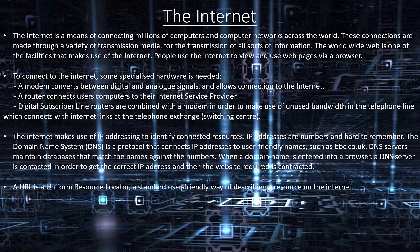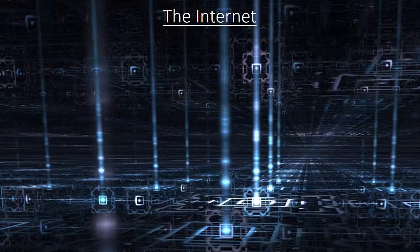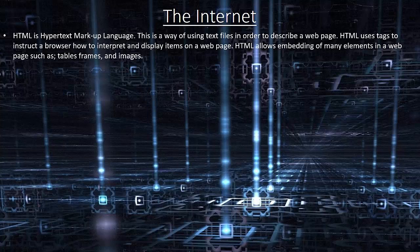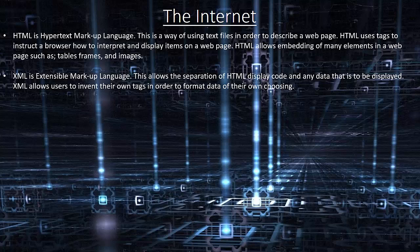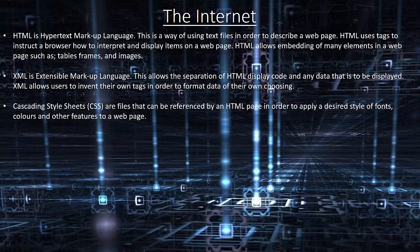A URL is a Uniform Resource Locator — a standard user-friendly way of describing a resource on the Internet. HTML is Hypertext Markup Language, a way of using text files to describe a web page. HTML uses tags to instruct a browser on how to interpret and display items on a web page, and allows embedding of many elements such as tables, frames and images. XML is an extensible markup language that allows separation of HTML display code and any data to be displayed. XML allows users to invent their own tags to format data of their own choosing. Cascading Style Sheets are files referenced by HTML to apply a desired style of fonts, colours and other properties to a web page.